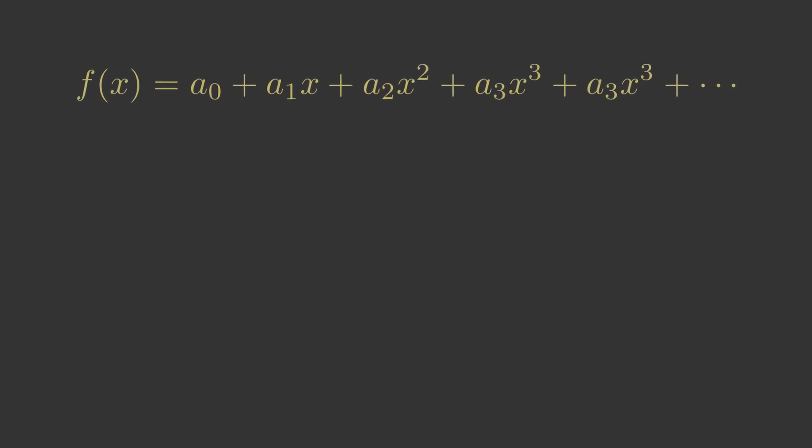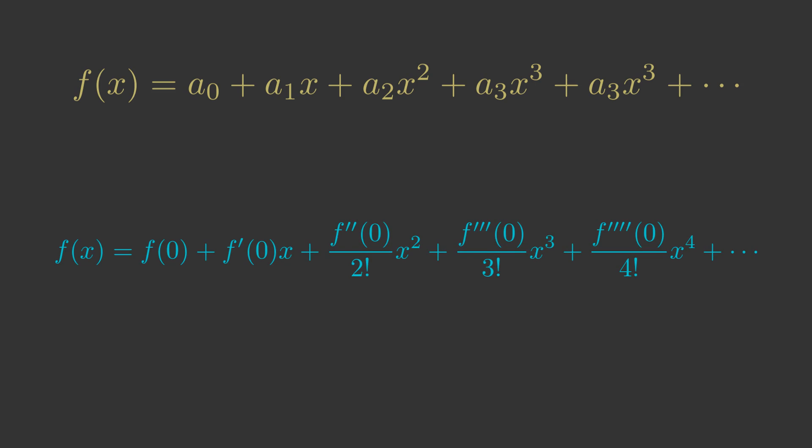A Maclaurin series allows us to calculate the value of a function f as a polynomial. For a particular function f we can calculate the values of the coefficients in the equation. a0, the constant term, is equal to f of 0. a1, the term in x, is equal to f prime of 0, that is the value of the first derivative of f when x is 0. a2, the term in x squared, is equal to f prime prime of 0 over 2, where f prime prime of 0 is the value of the second derivative of f when x is 0. The other terms follow the same pattern.